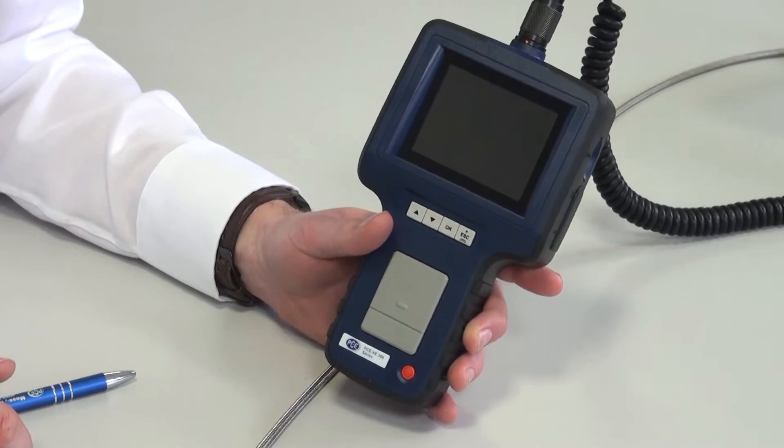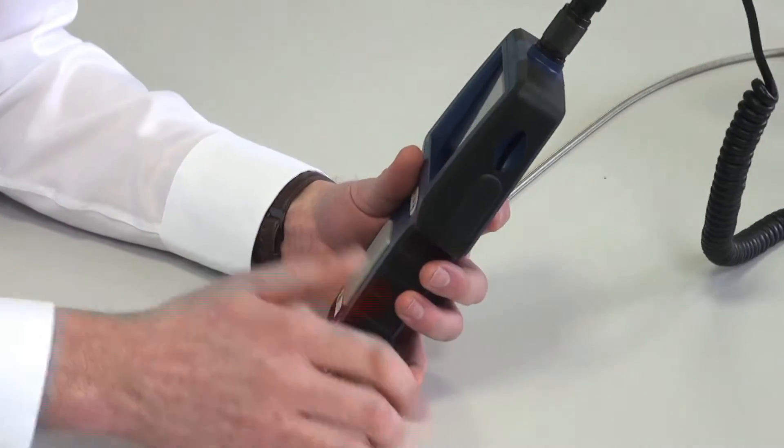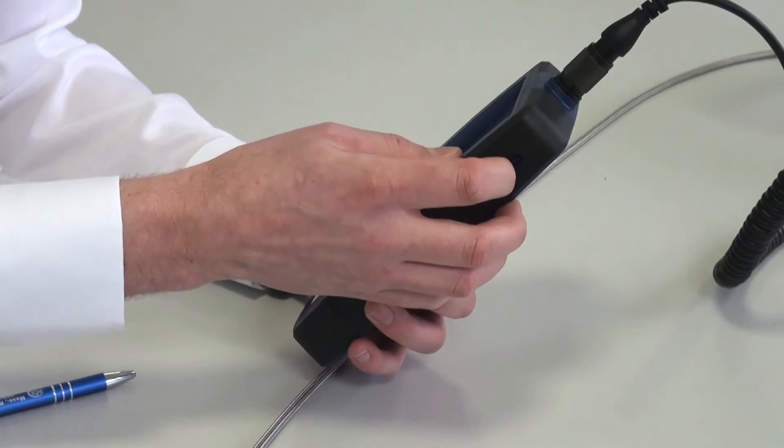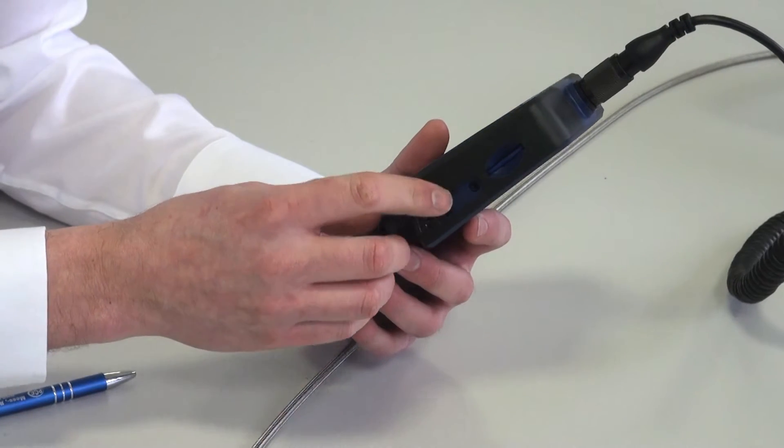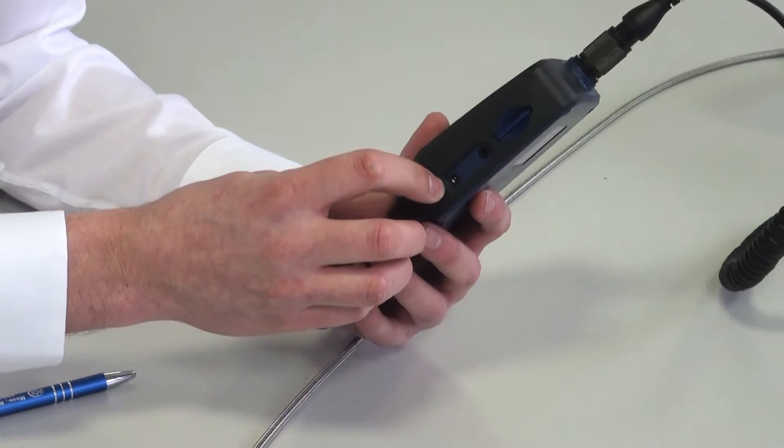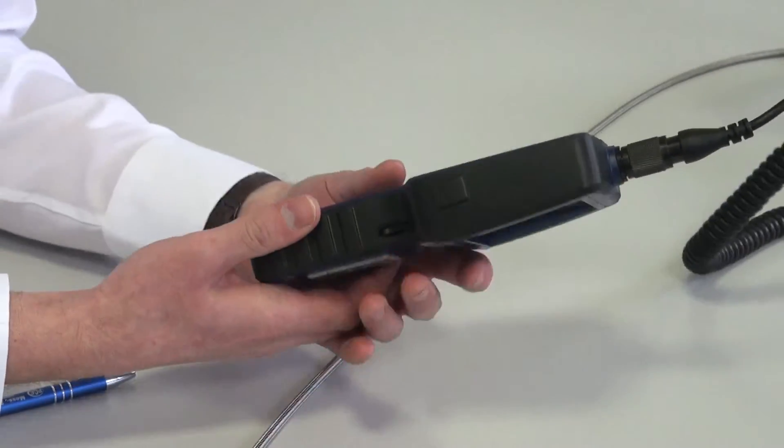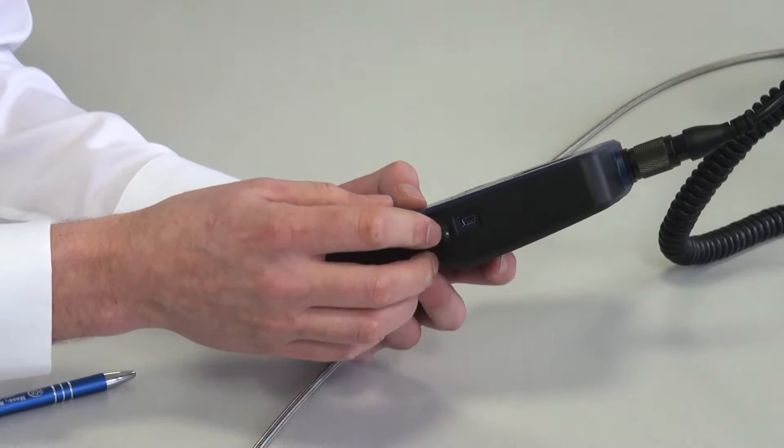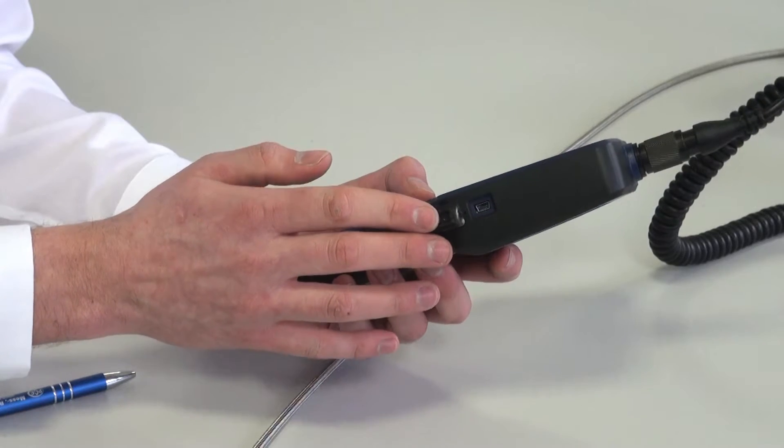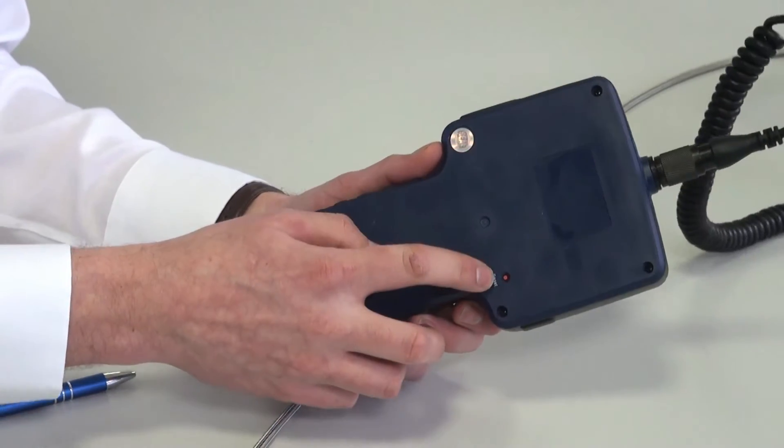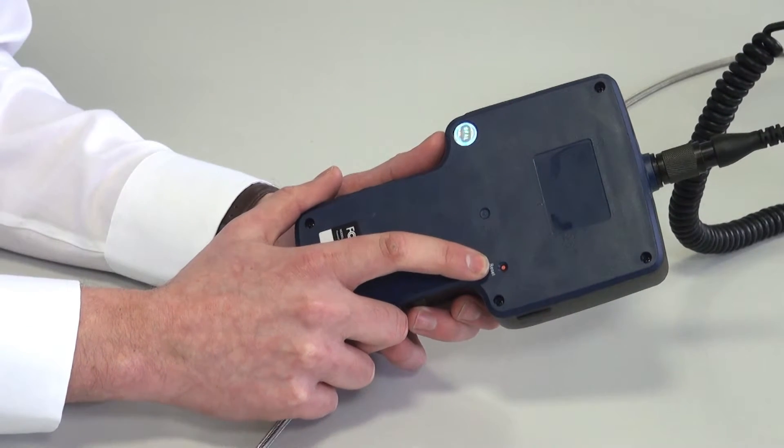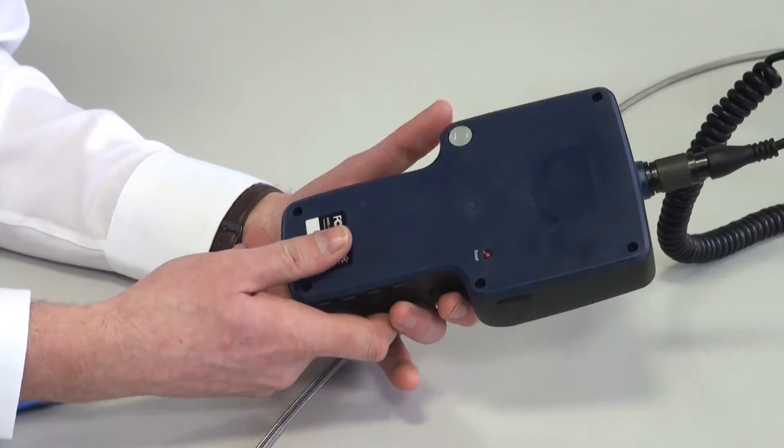We have on the side different connections. We have the slot for the SD card which you can plug in, the connection for the TV, and the connection for the power supply. On the opposite side, we have here underneath the rubber cover a USB socket to connect the endoscope directly to the computer. On the back there is a reset button to restart the endoscope in case it has an error while working.